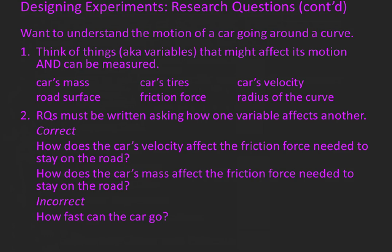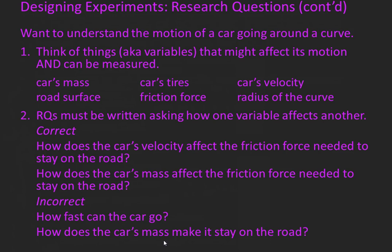Let's look at another example. How does the car's mass affect the friction force needed to stay on the road? An incorrect version of this would be: how does the car's mass make it stay on the road? While this last one has a variable—mass—it doesn't say how it affects another variable. It just says 'stay on the road.' We can't measure 'stay on the road,' but we can measure friction force.